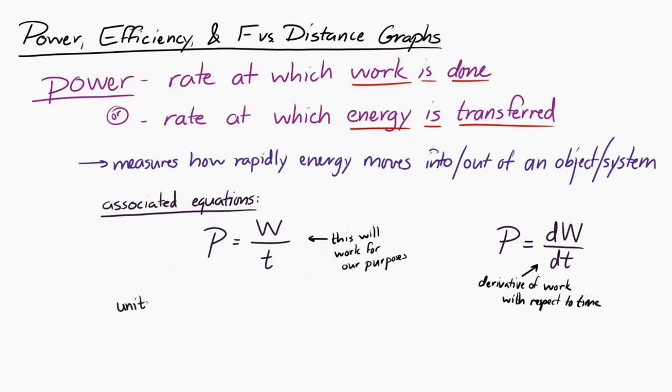The unit of power is the watt, represented with a W, and power is a scalar. Now this unit, going back to that, a watt can be related to units we've seen before. By looking at the power equation, we know that power is work per time.